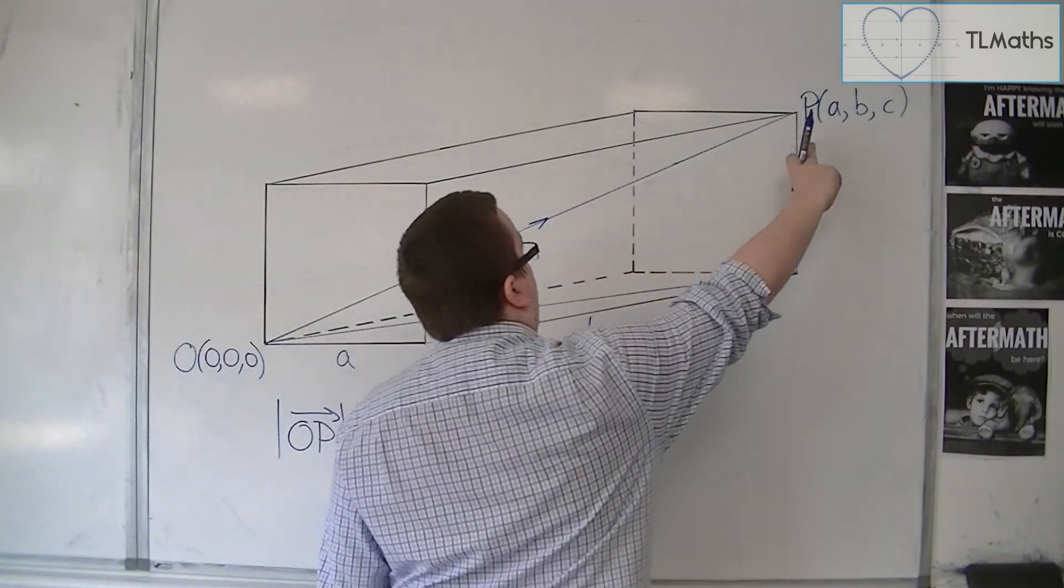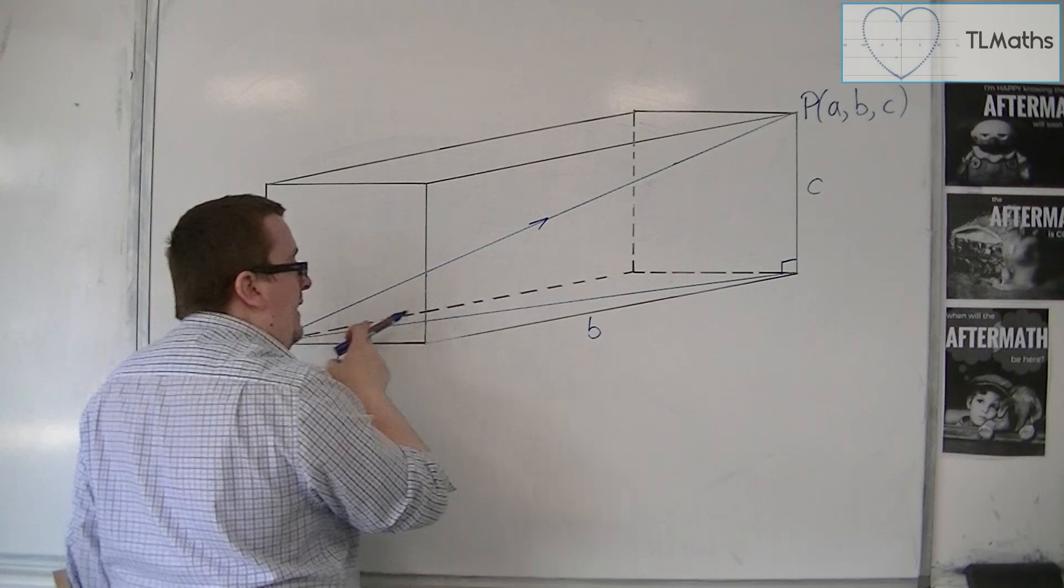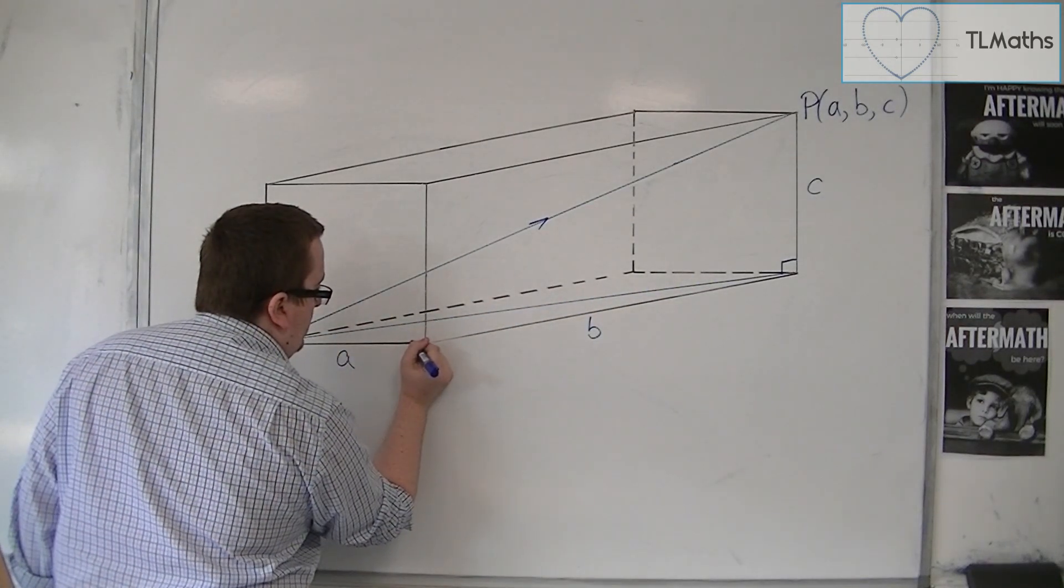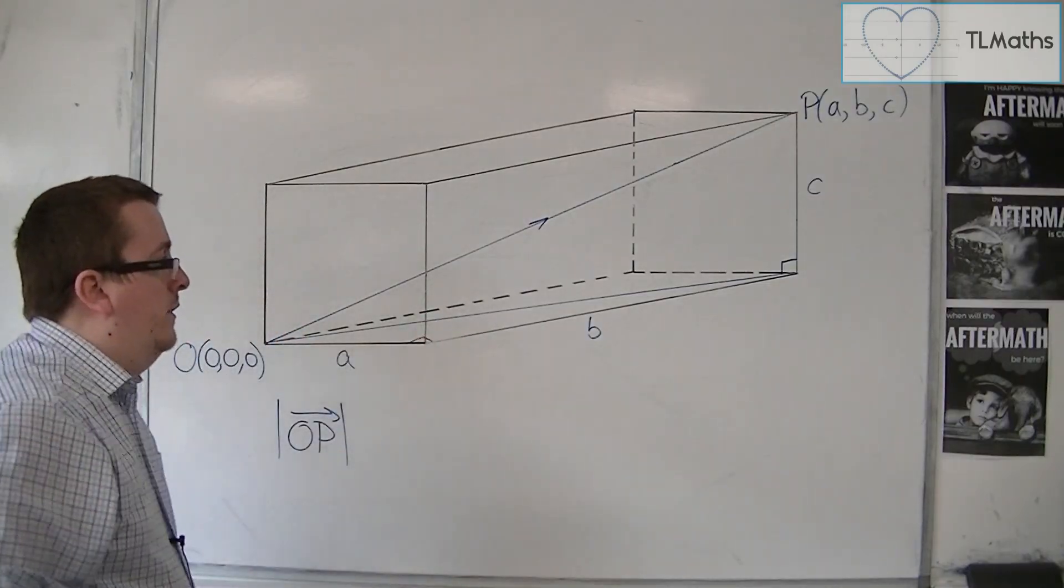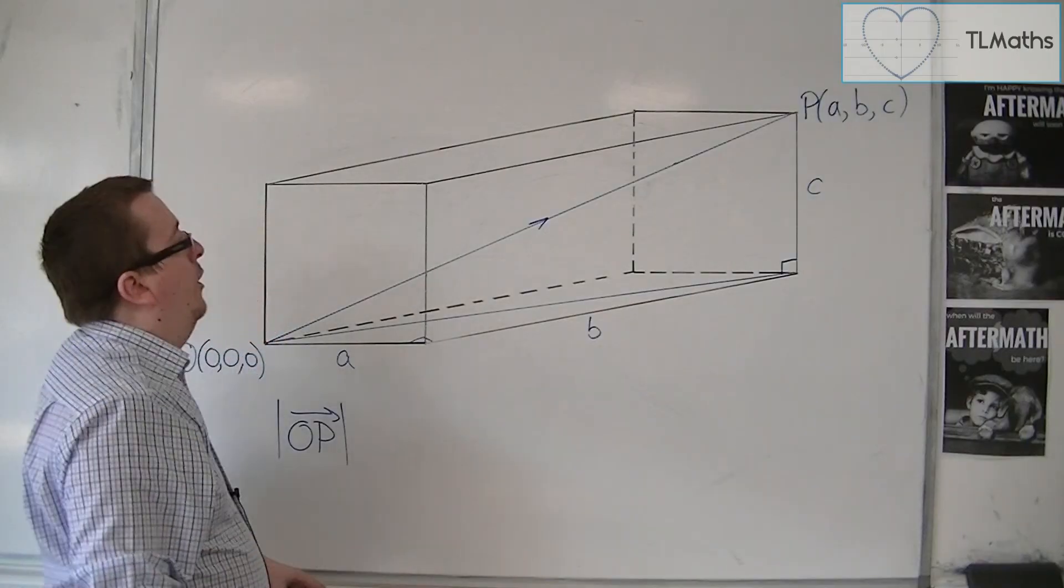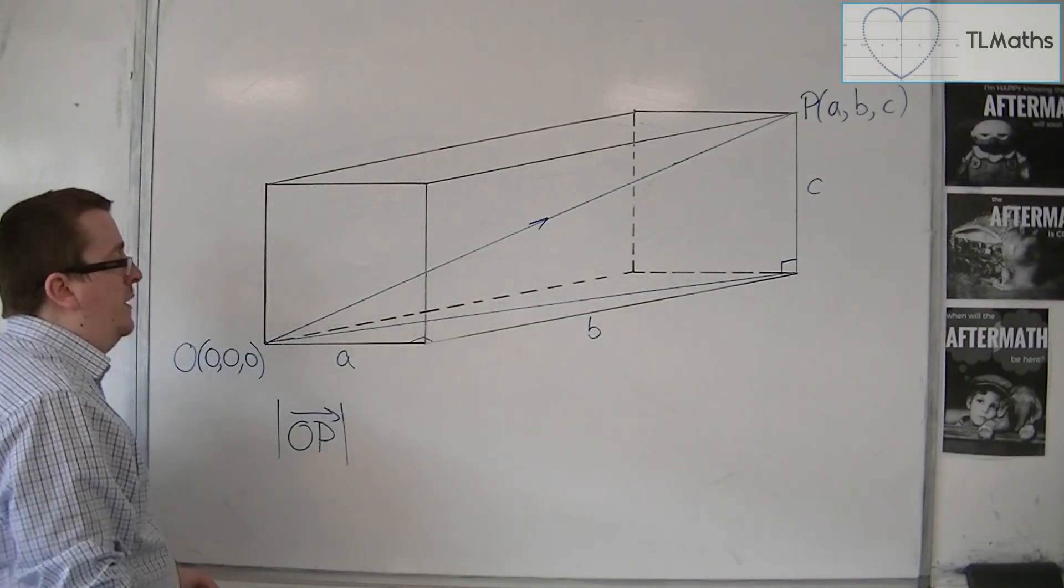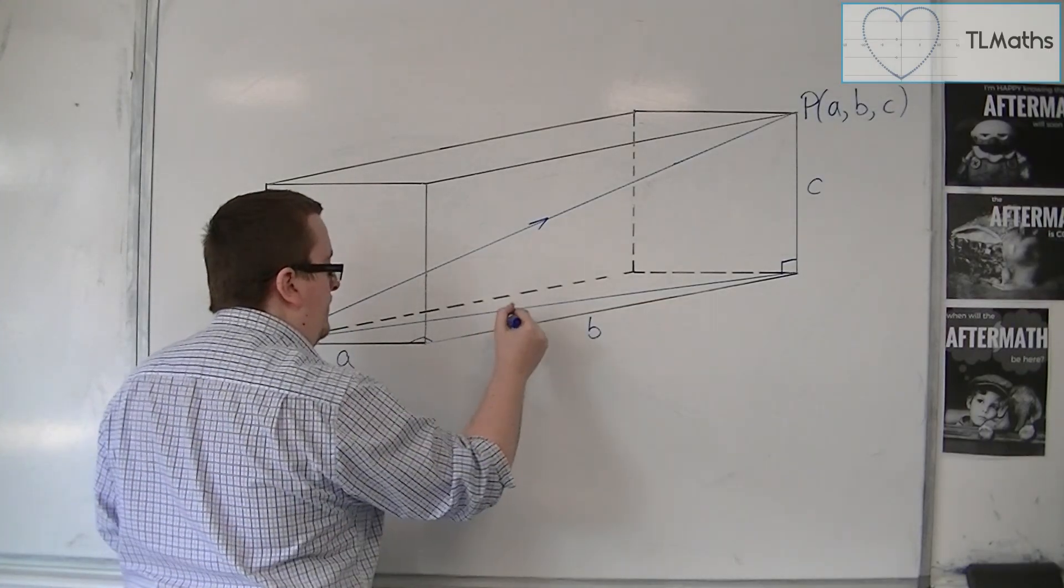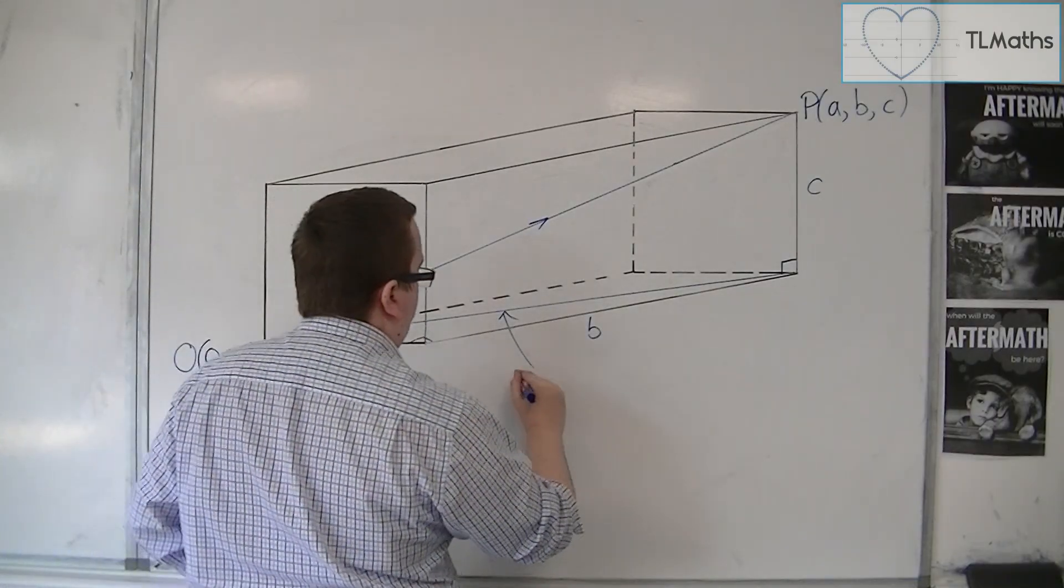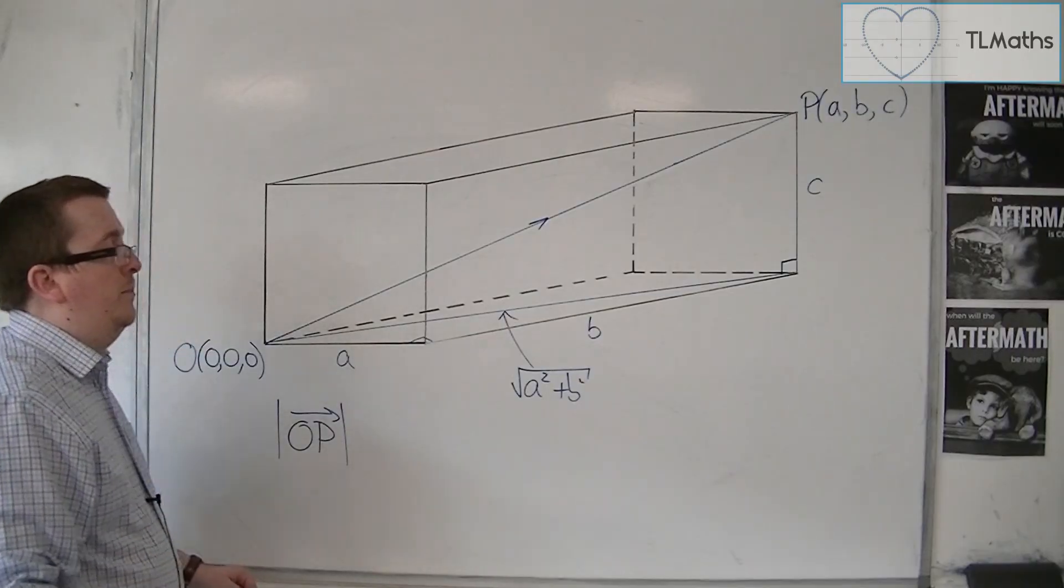I've got the height of the triangle; I just need the base. The base is actually the hypotenuse of another right-angled triangle, which is drawn on the floor of this box. It has side lengths of A and B. So this length here is the square root of A squared plus B squared, using Pythagoras.